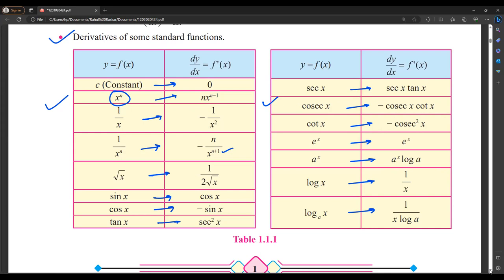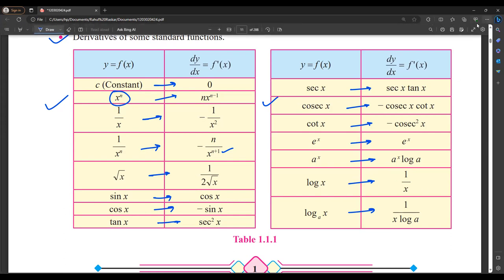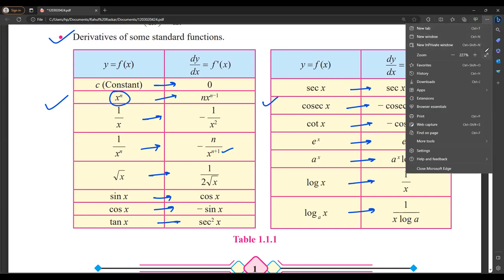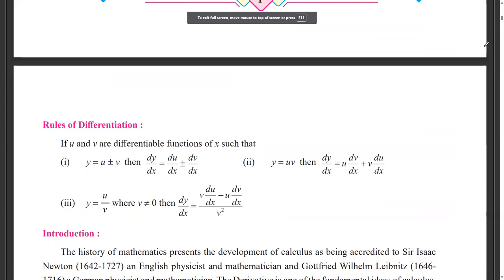We have to remember this table. You can make a chart and stick it on the wall. If you remember this, then we can easily solve the next problems. Yesterday we also saw the rules of differentiation — based on all of this. There are three rules: for addition, subtraction, multiplication, and a third for division.